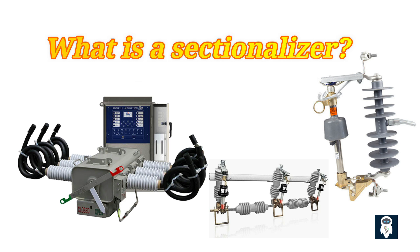they simplify the process of restoring service after a fault has been eliminated. The length of the primary line that each sectionalizer can preserve is contingent upon the value of the loads, lightning probabilities, and tree conditions. Sectionalizers can typically manage up to two or three miles of line effectively.